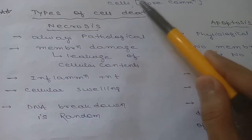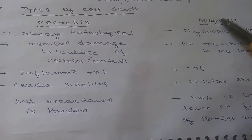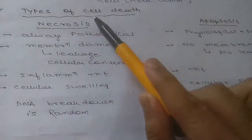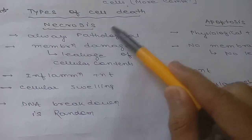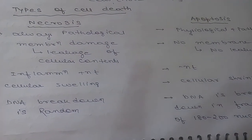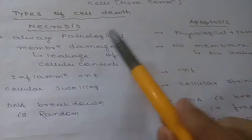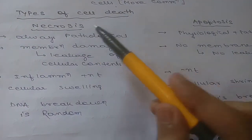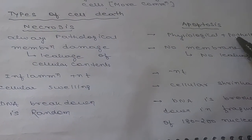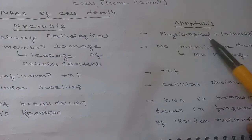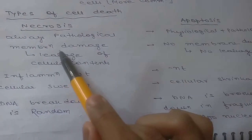We are discussing types of cell death. There are two types: necrosis and apoptosis, which have been discussed in a separate video. Here we will look for differences. Necrosis is always pathological, while apoptosis is both pathological and physiological.